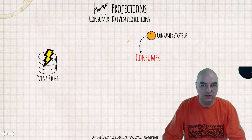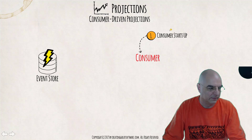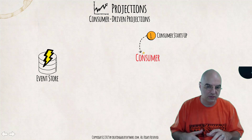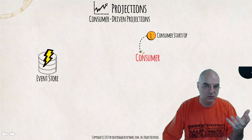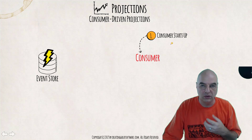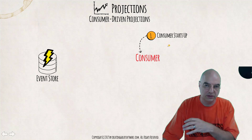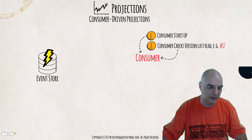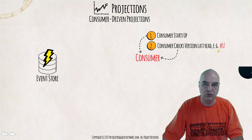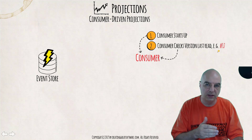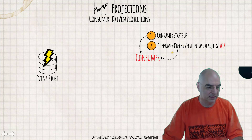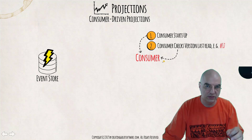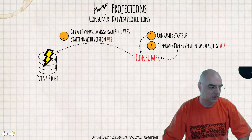The next type is what I call consumer-driven projections. The consumer would start up, which is usually a separate system or separate service running on its own process. The consumer interested in generating these projections — it could be a read model service creating reports for the business — will, upon startup, check what was the last point of an aggregate stream it was able to process. In this case, the last version of that aggregate root was version number 17. So it stores that locally and is aware of the last time it read the information.